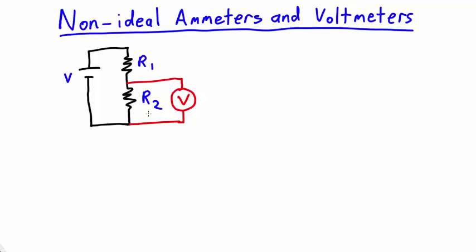Usually between 10 to the 7 and 10 to the 9 ohms. So as long as the component being measured has resistance that's small compared to this big number here, there should be no significant impact on the voltage measured.